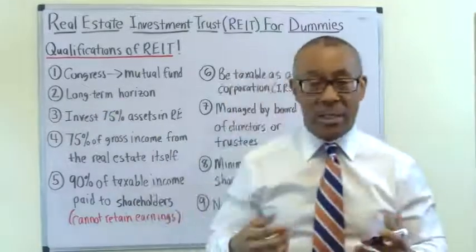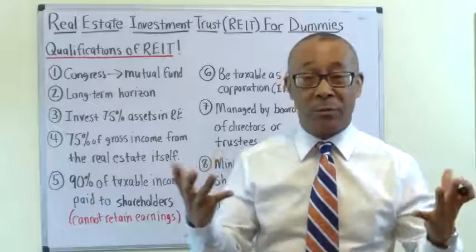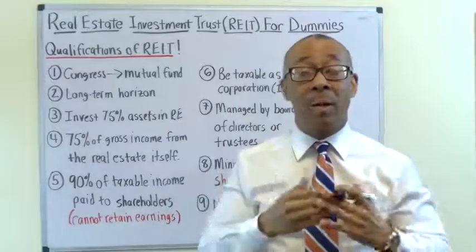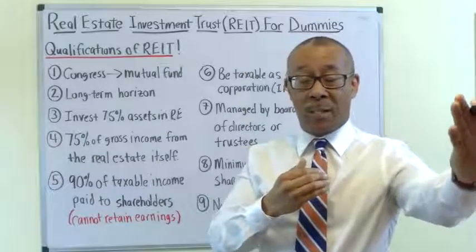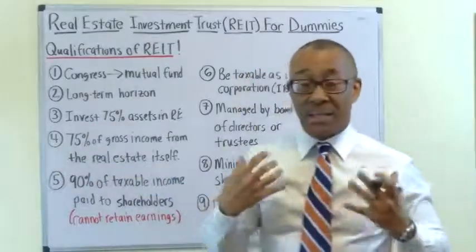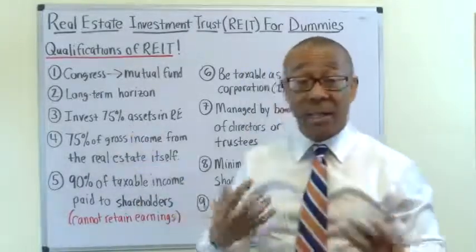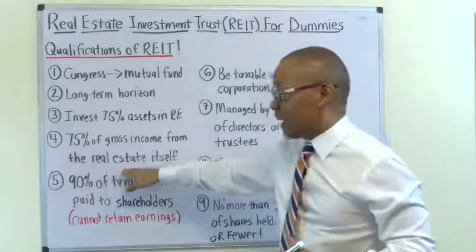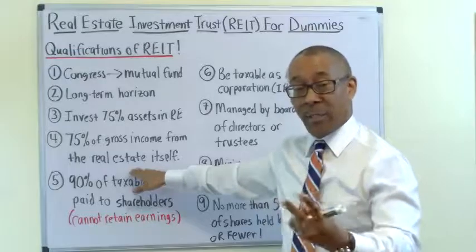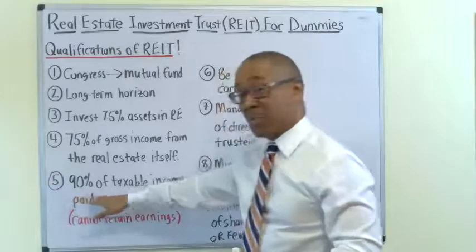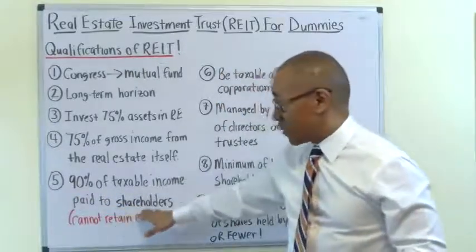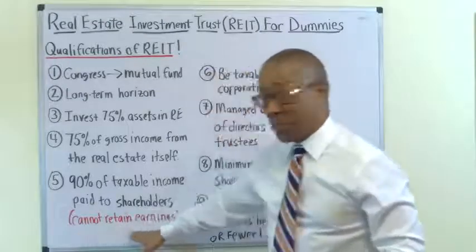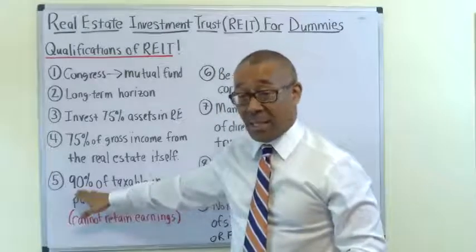Congress designed REITs to be similar to a mutual fund, and they still largely operate like mutual funds today. Number two, REITs must have a long-term investment horizon with the property. Number three, a REIT must invest 75% of its assets in real estate only. Number four, a REIT must derive 75% of its gross income from real estate itself — whether rental income, mortgages, or from the sale of property. And number five, 90% of the taxable income from a REIT must be paid out to shareholders. This is very important for them to maintain their status as a REIT. The downside is that a REIT cannot retain earnings — it must pay out at least 90%, which means it can't hold funds to buy other things or fix up properties.